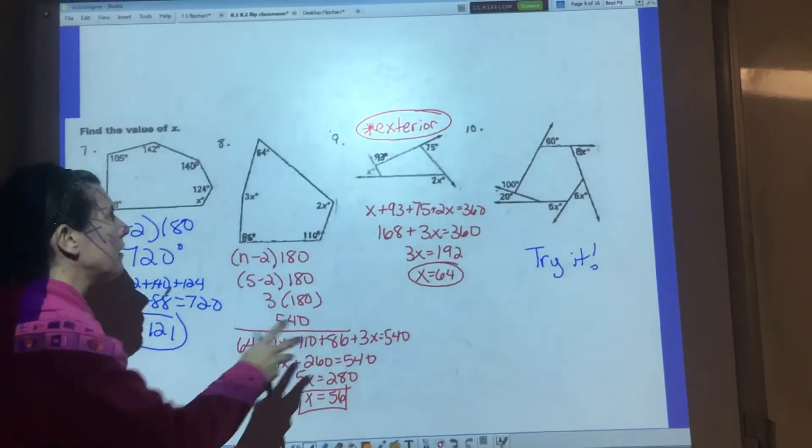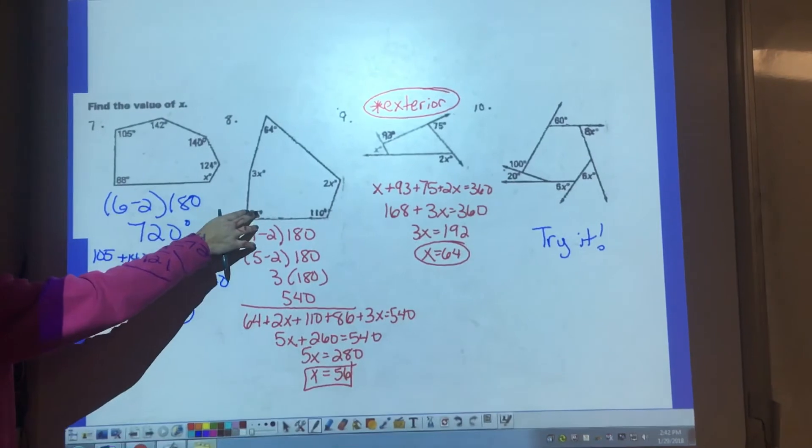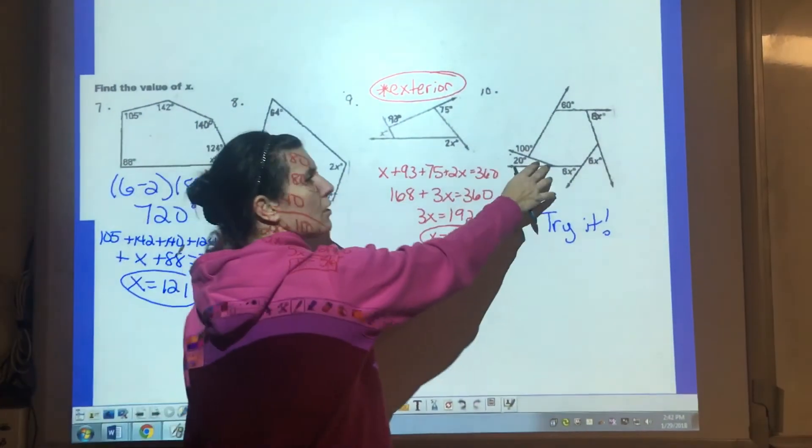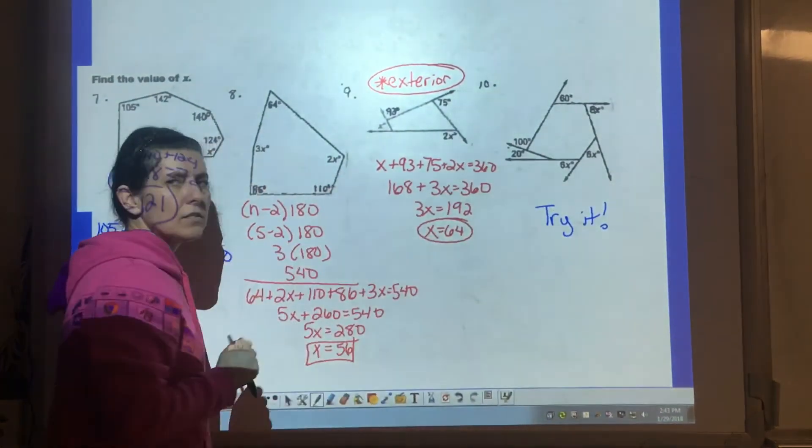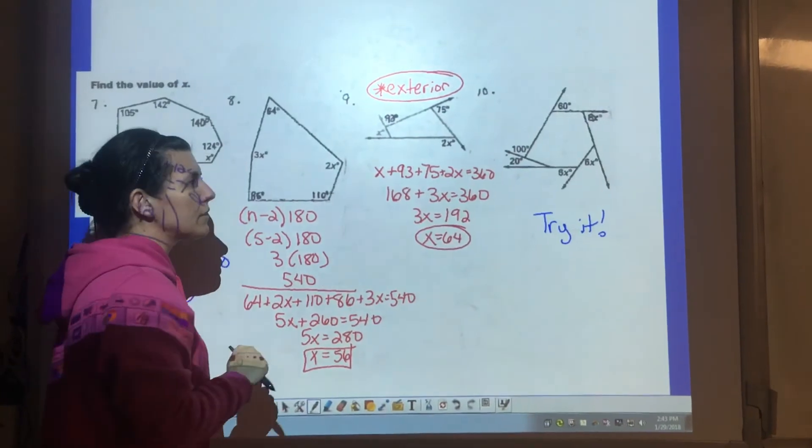9 and 10 are a little different. If you look at the difference, 7 and 8 are inside angles. 9 and 10 are exterior angles. And remember, exterior angles must always add up to 360 degrees.